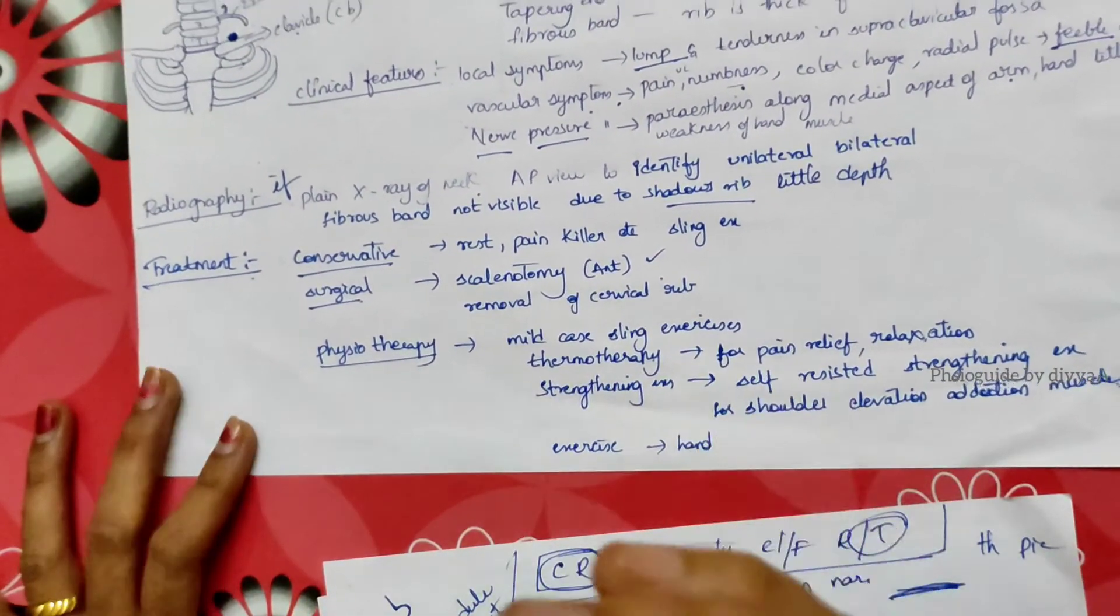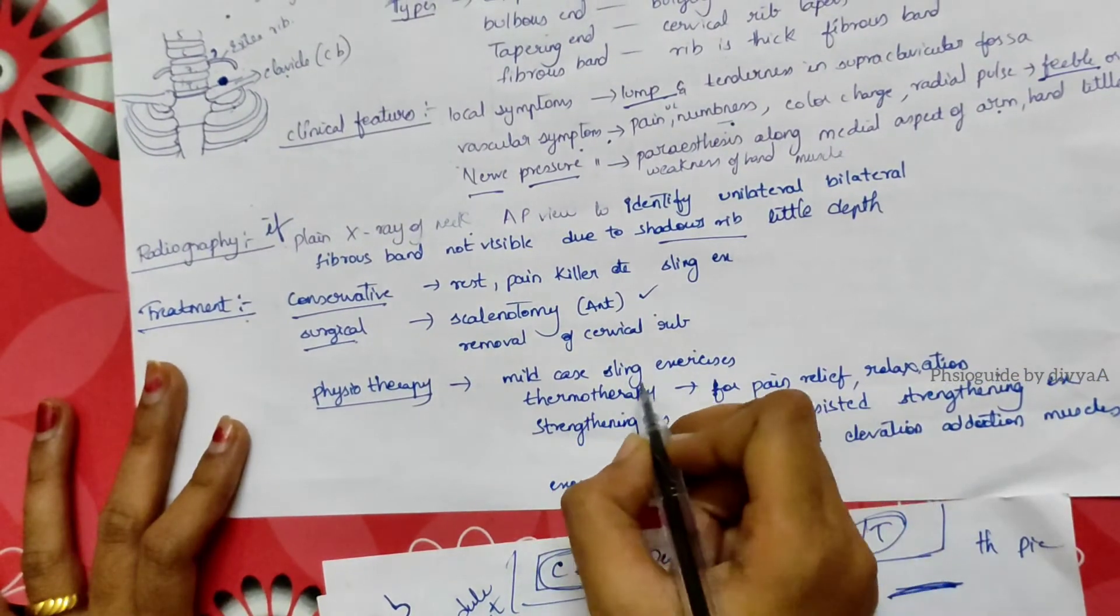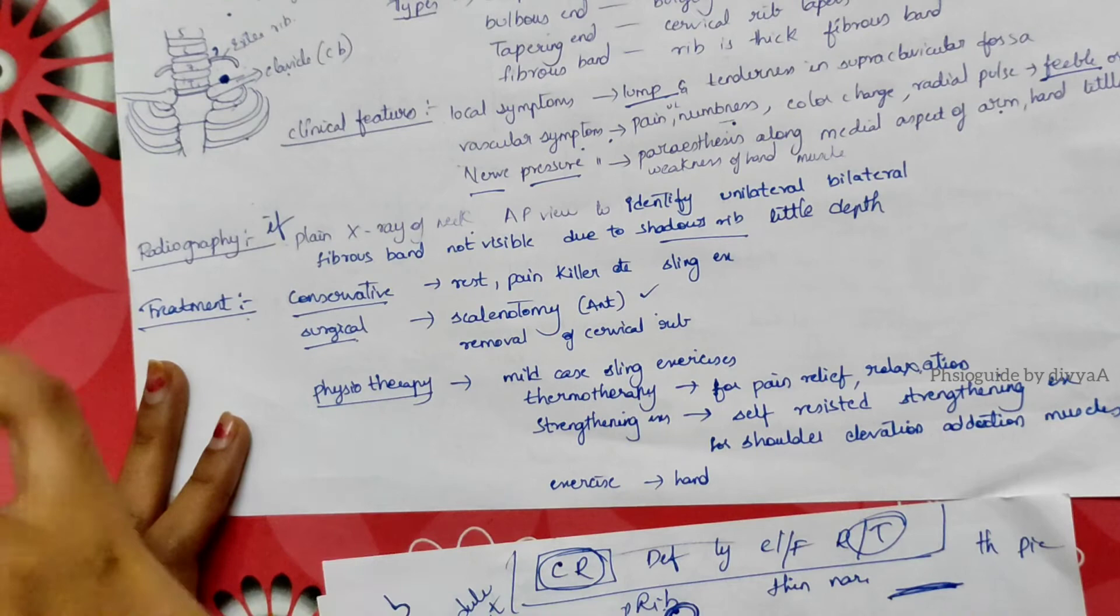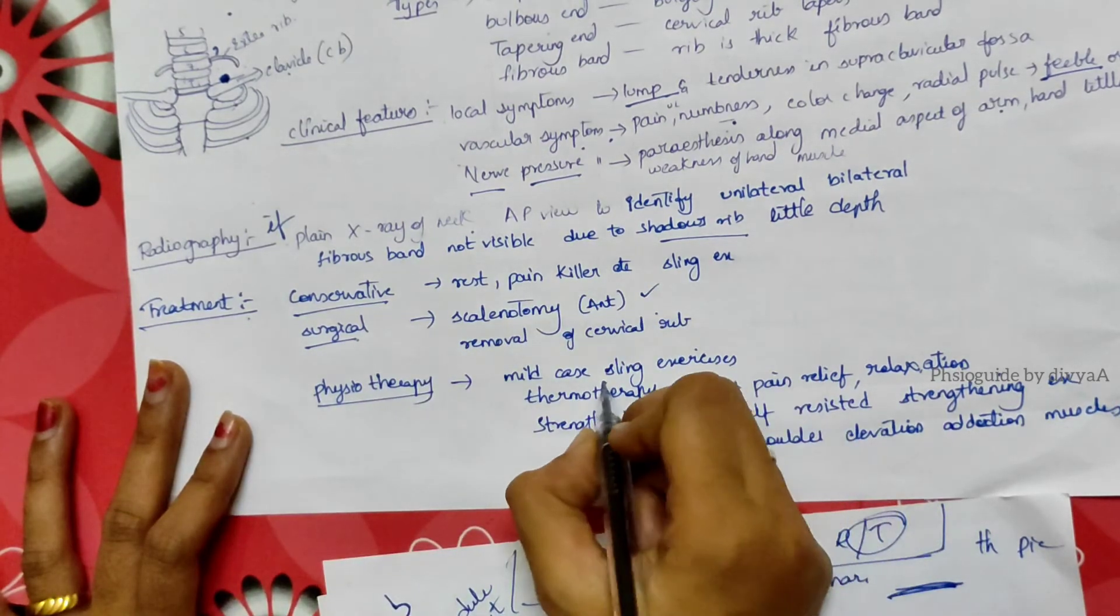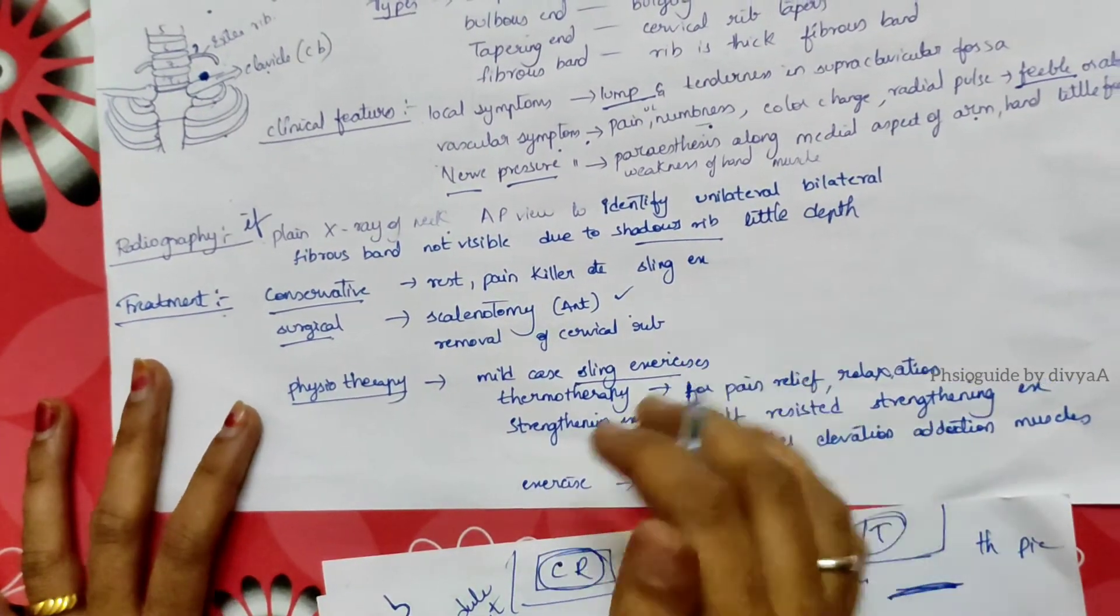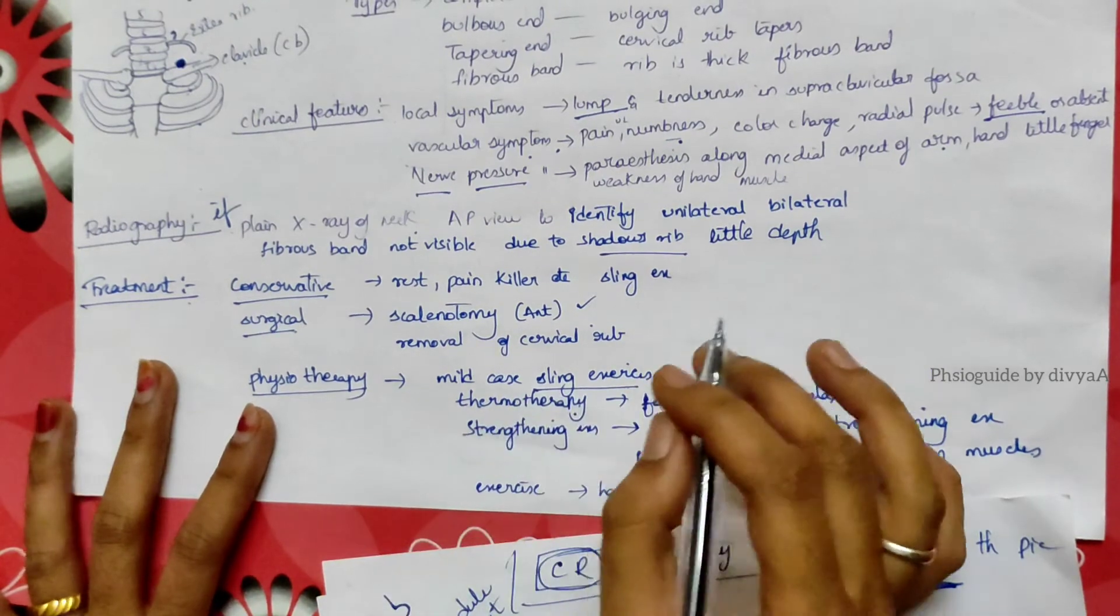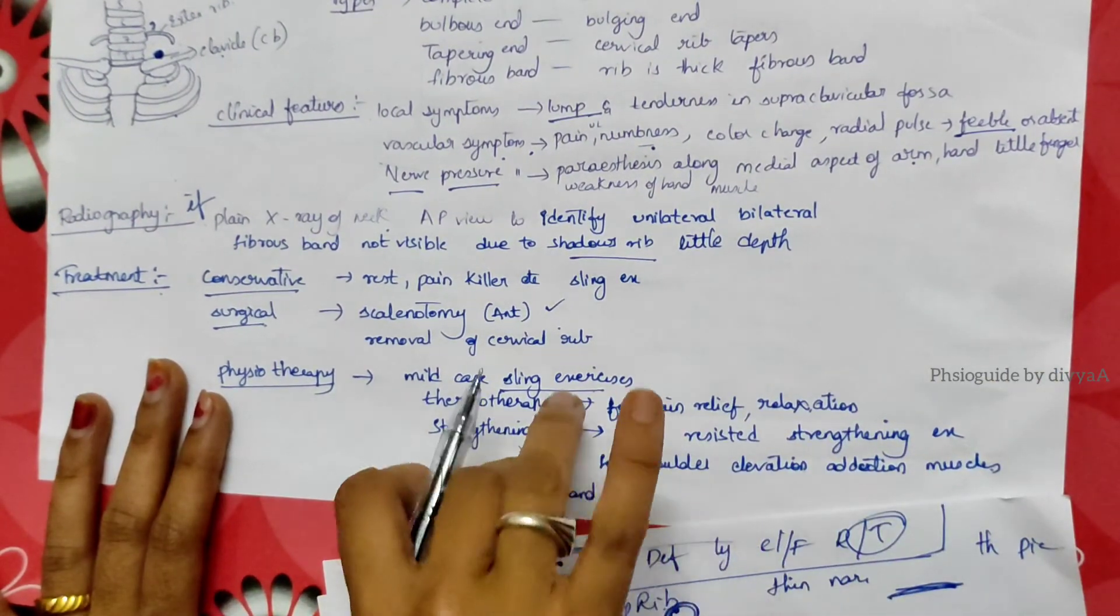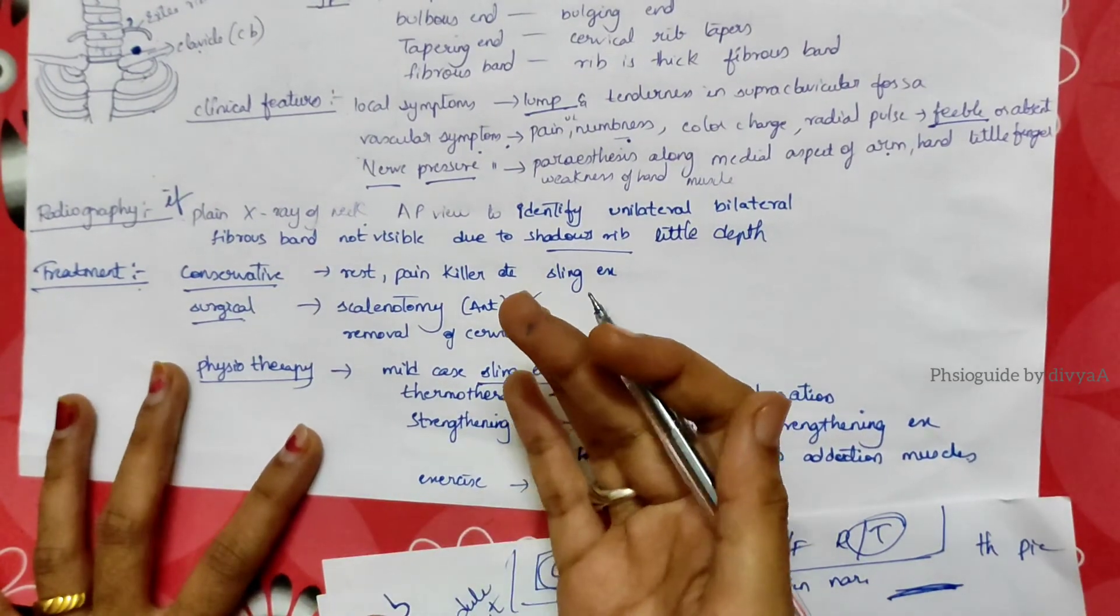In physiotherapy, for mild or starting cases, we'll suggest sling exercises. We give a sling bag and suggest exercises with that sling bag. Then thermotherapy, heat therapy to relieve pain and relaxation, and strengthening exercises, shoulder exercises.